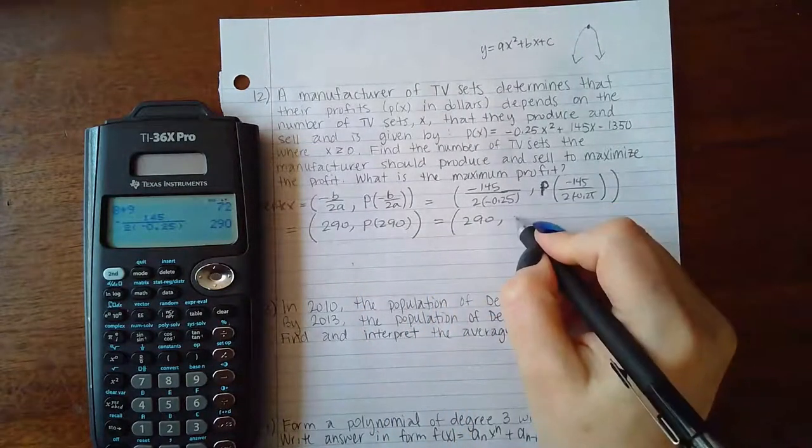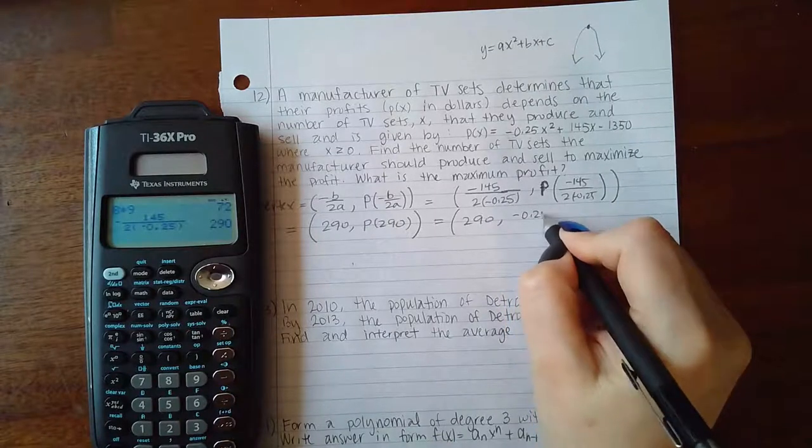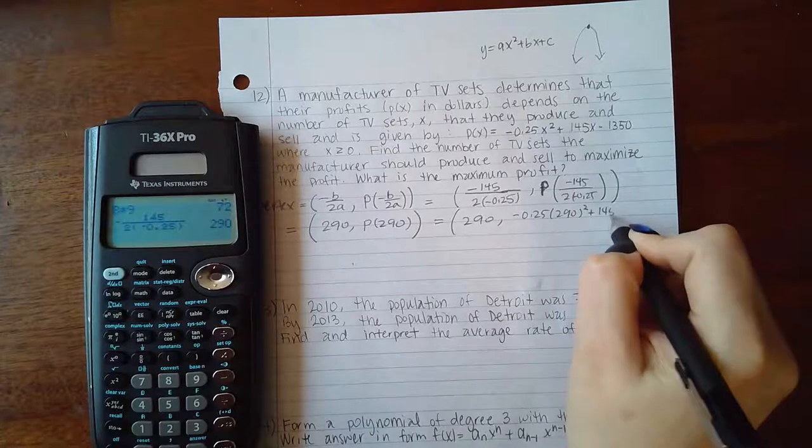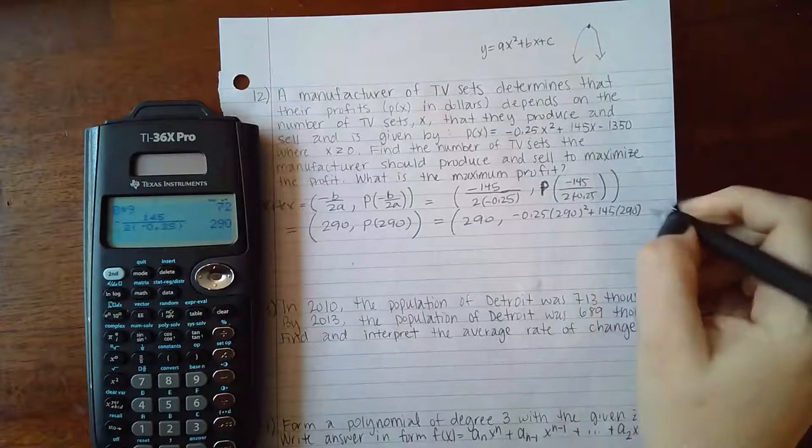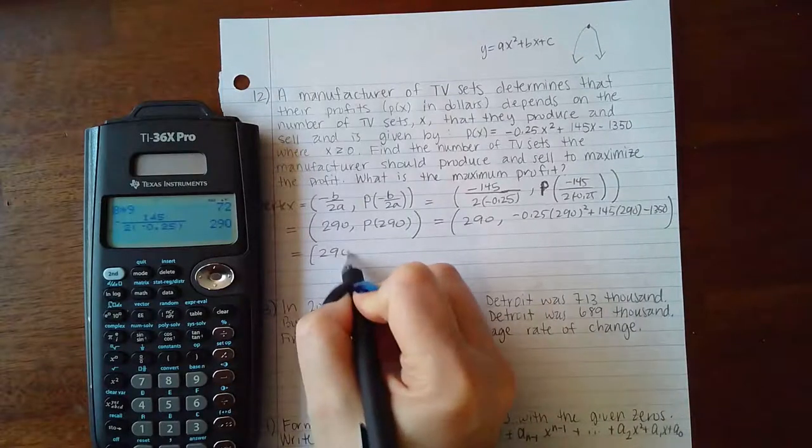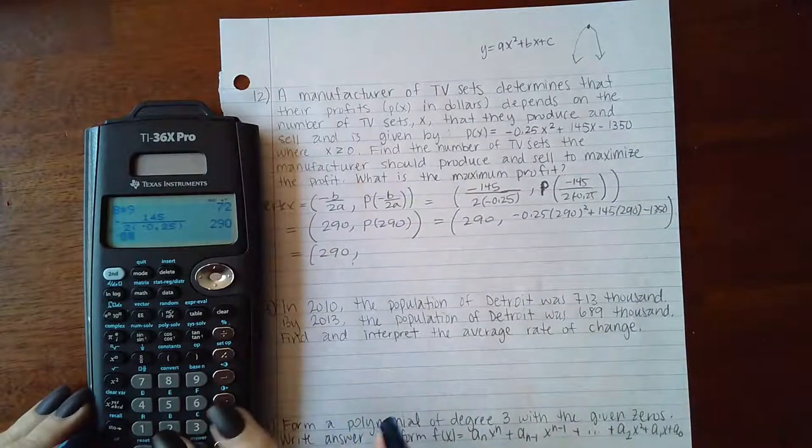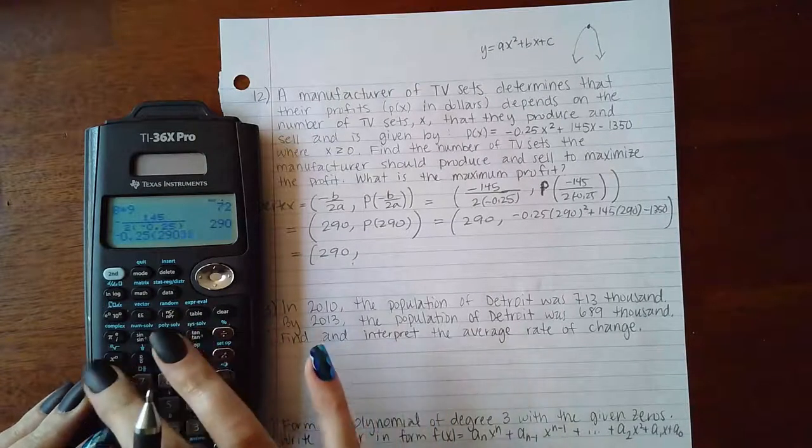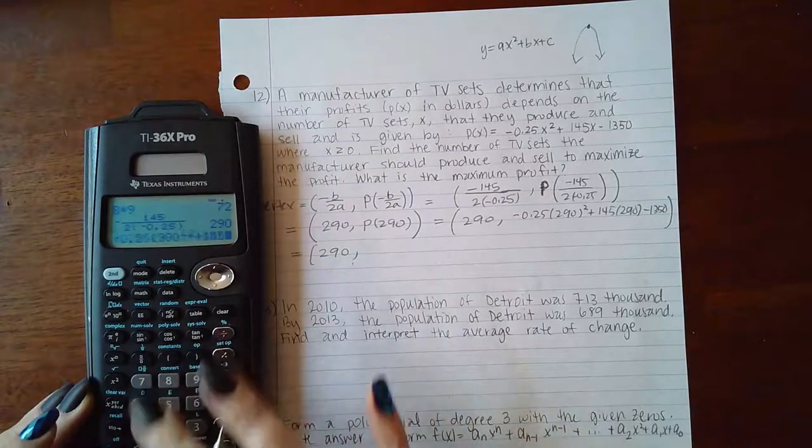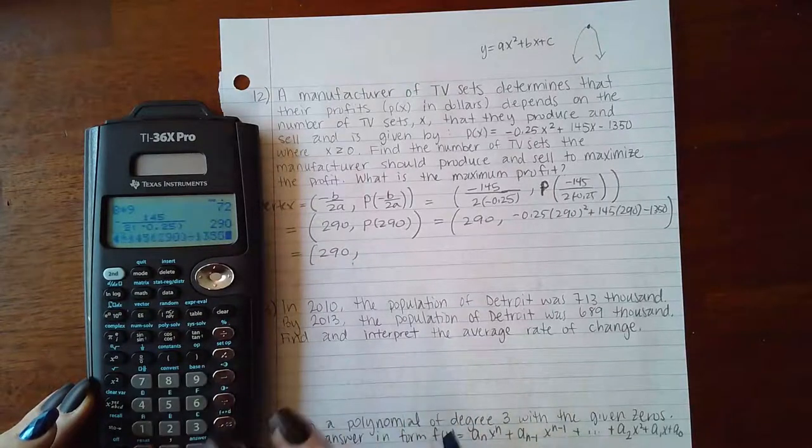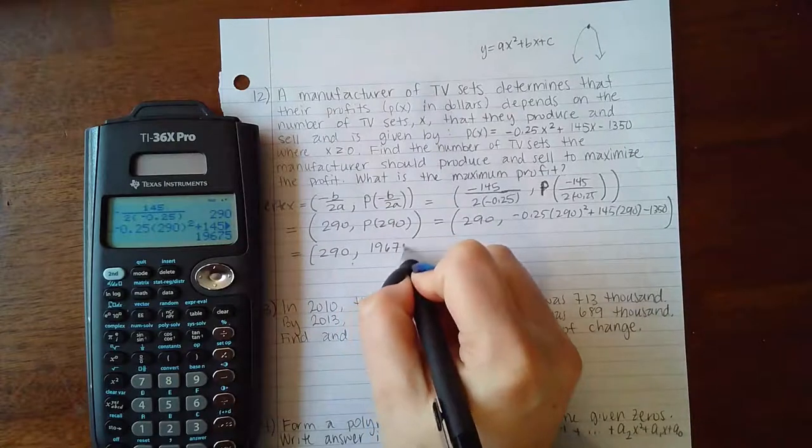I'm going to plug in 290 into the function to figure out that y-value. So negative 0.25 times 290 squared plus 145 times 290 minus 1350, and we get 19,675.